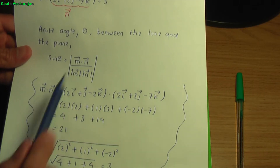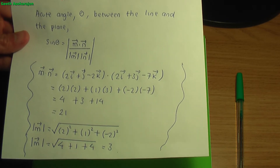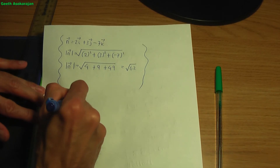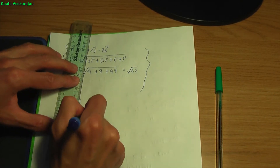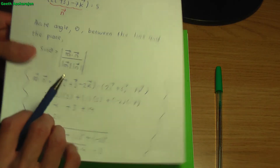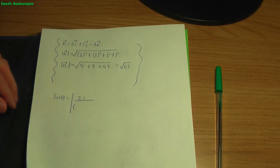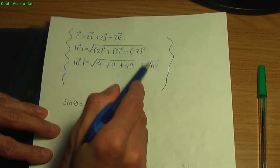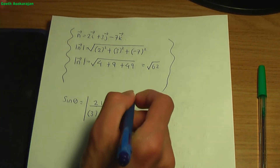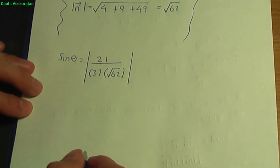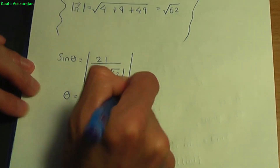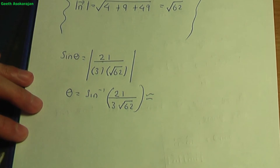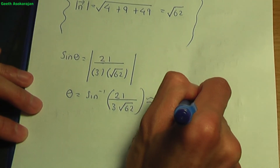Now we have everything: m·n = 21, |m| = 3, and |n| = √62. Applying the formula: sin θ = |21| / (3 × √62). Therefore θ = sin⁻¹(21 / (3√62)), which gives an angle of approximately 62.7 degrees — the angle between the line and the plane.